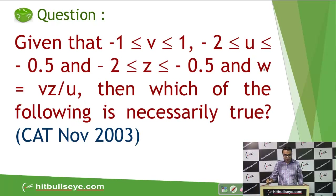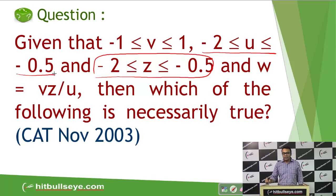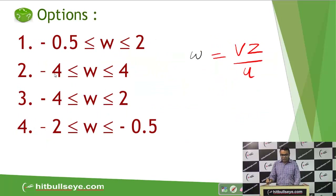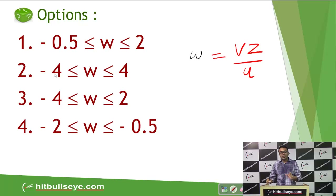If I observe carefully, the value of Z will always be negative because it ranges from minus 2 to minus 0.5. Similarly, the value of U is also always negative, ranging from minus 2 to minus 0.5. That means the negative signs of Z and U cancel each other, giving a positive result. Depending on the value of V, I'll get a positive or negative value for W. So I only need to consider the magnitude for Z and U.